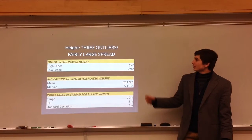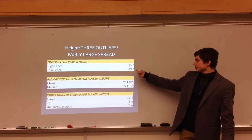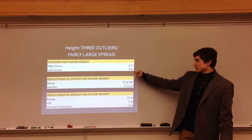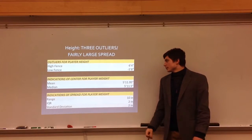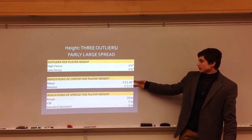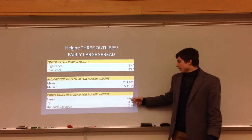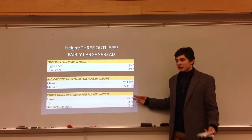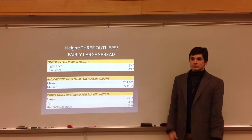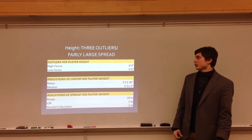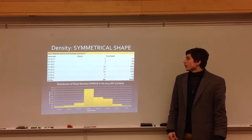The density box plot shows a fairly large spread with three outliers. The high fence is 6'4" and the low fence is a negative value — essentially negative 5'8" — so there's no negative height, which flags the outlier threshold. The mean and median are pretty close, indicating a tight center. The height range is 10 inches, which is a pretty large spread.